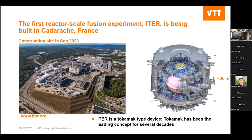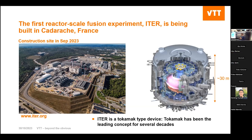The first reactor-scale fusion experiment is being built in France — this is ITER. Here you can see the construction site from two months ago; it's a real thing being built in southern France. The height of this entire machine is about 30 meters, the major radius is 6 meters. ITER is supposed to demonstrate the feasibility of net energy gain, generating an amplification factor of about 10 in reactor-relevant conditions. It is a tokamak-type device.